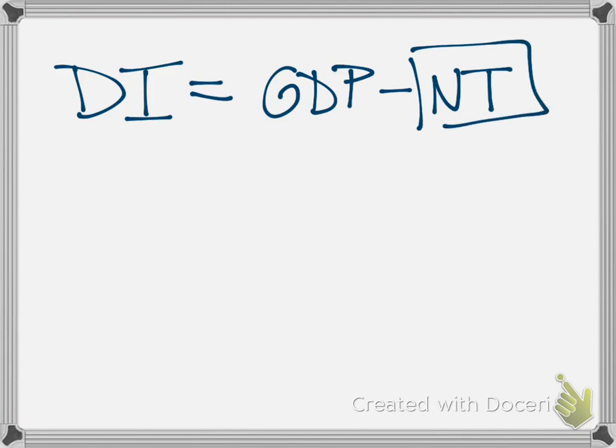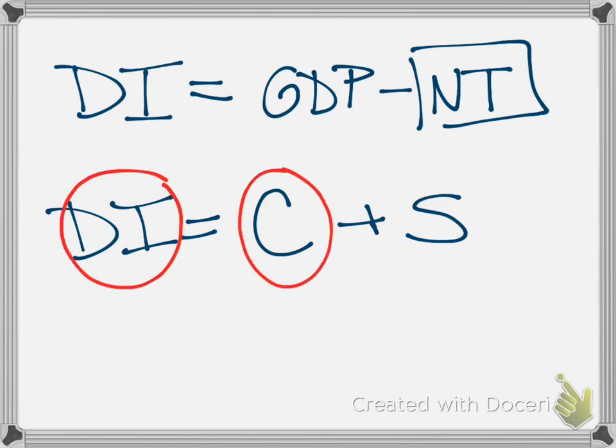Once they have that disposable income, they have two options. They either spend it, we call that consumption spending by households, or they save it, and the savings go to financial institutions. Those are their two options. Now we're going to look at specifically this relationship between disposable income and consumption. That's what we're going to call the consumption function.